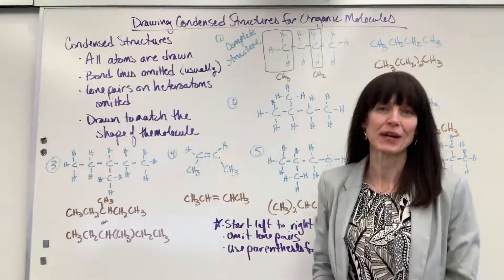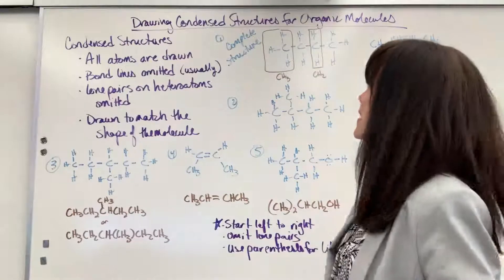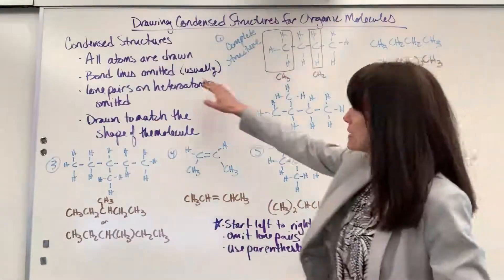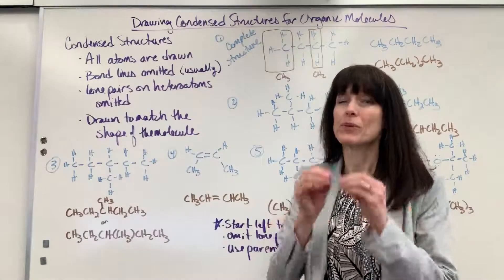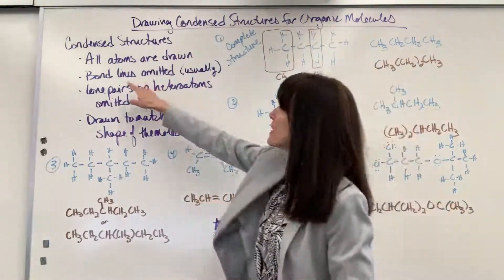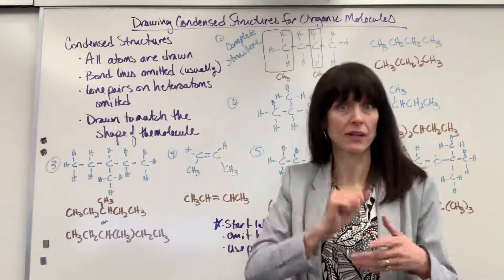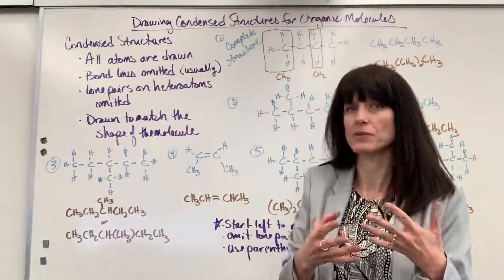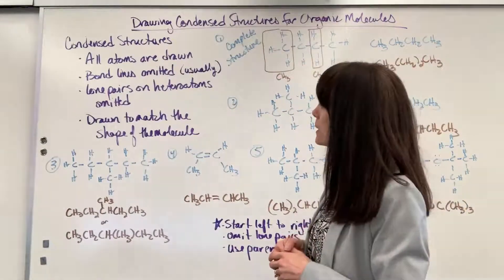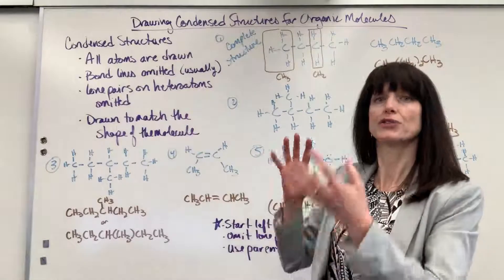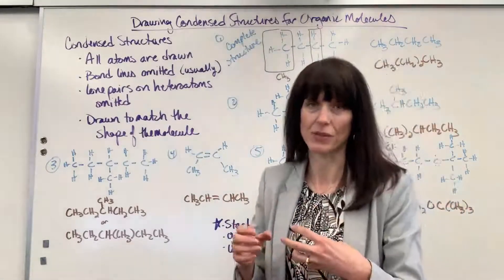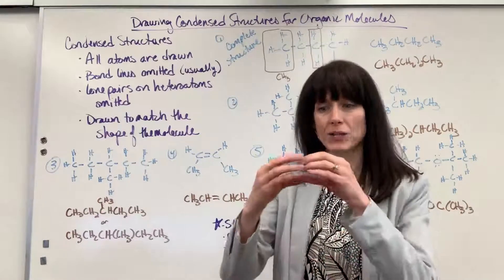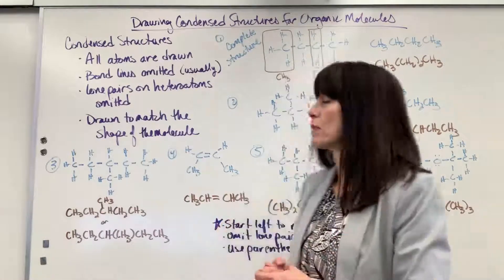Hi everybody. I'm going to show you how to draw condensed structures for organic molecules. With condensed structures, we draw all the atoms but we usually omit the bond lines — a bond represents two electrons being shared, and we omit those lines, with a couple of exceptions I'll show you. We also draw the molecule to match the shape of the molecule, which is unique to organic chemistry.